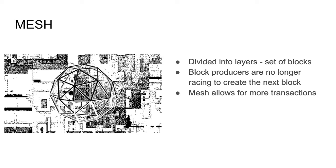SpaceMesh uses a mesh structure, as opposed to a one-dimensional chain. The mesh is divided into layers, which are sets of blocks. As long as all blocks follow the protocol rules, they will be included in the ledger. This means that block producers are no longer racing to create the next block, removing perverse incentives in block submission. SpaceMesh can process a significant amount of transactions within a given time frame, and it also allows meshers to receive rewards more frequently compared to block producers in a traditional blockchain.